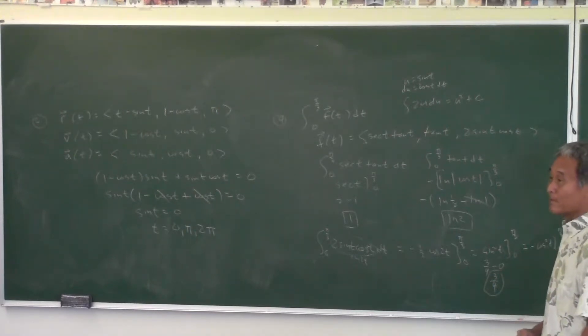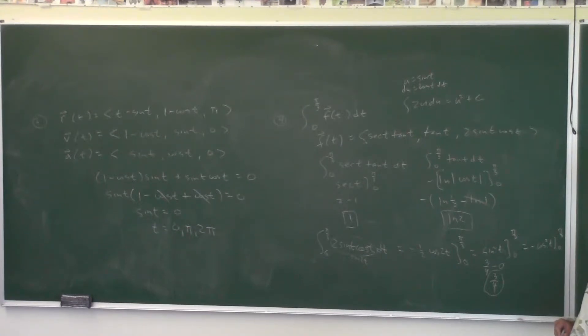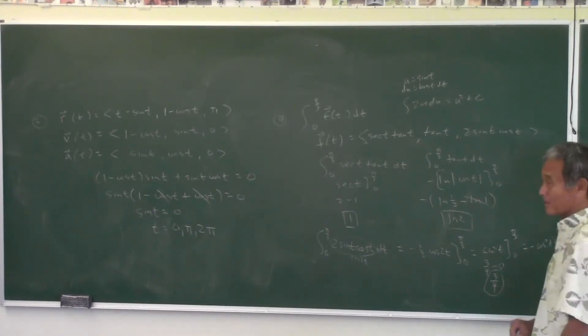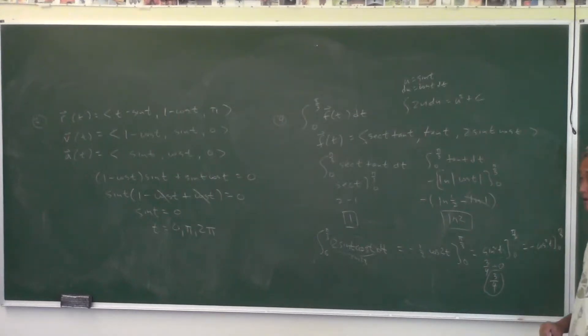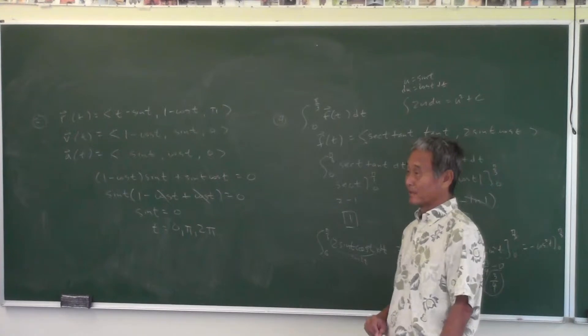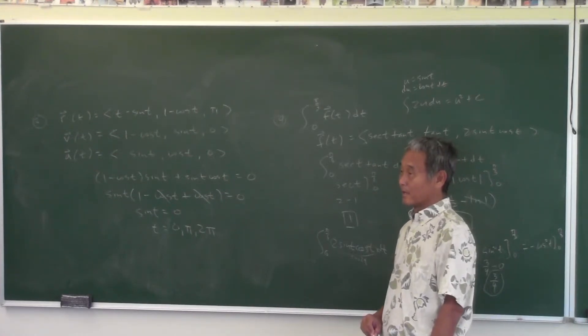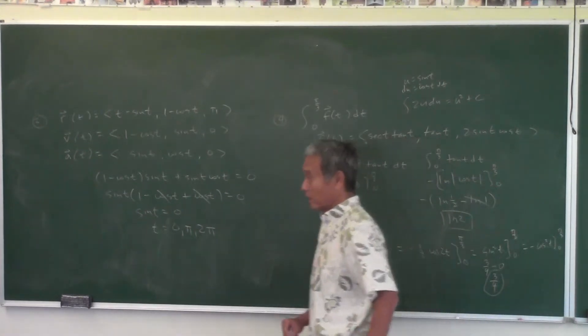So what are we trying to find in this problem? Find the integral of that thing from 0 to pi over 3. Oh, what did the answer look like? Was the answer a vector? Actually, that's right. That answer's right. I just did something wrong. I don't know. When I switched to sine. And then what about number 5?